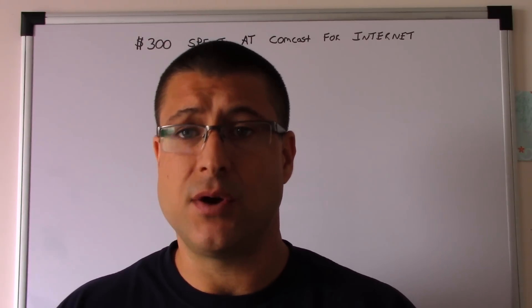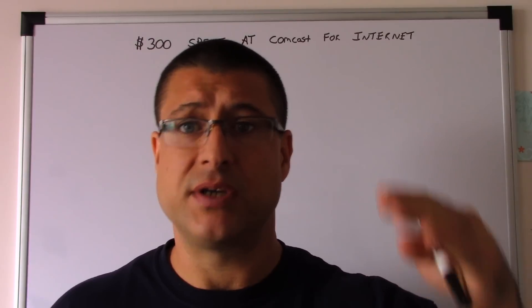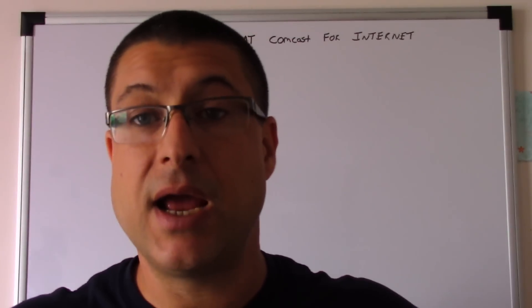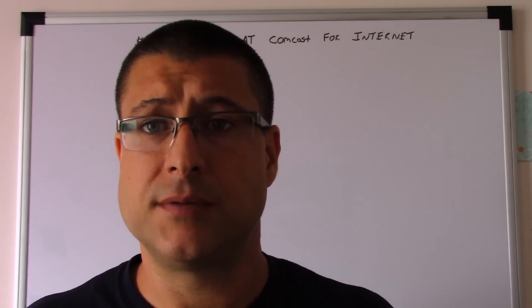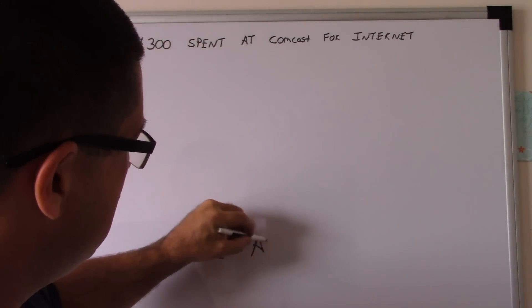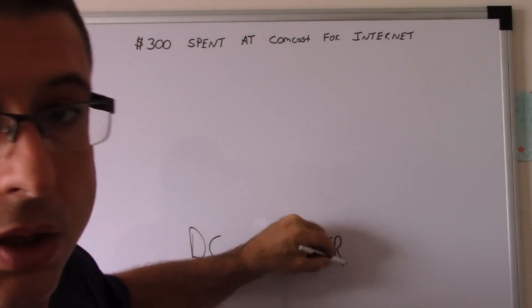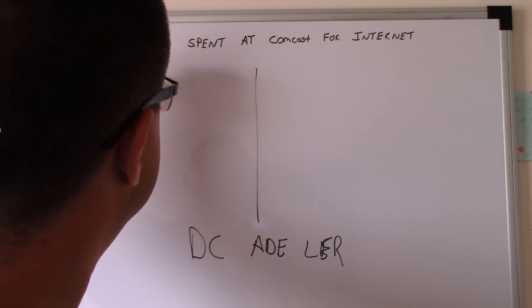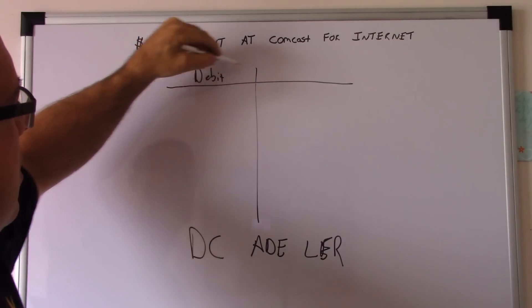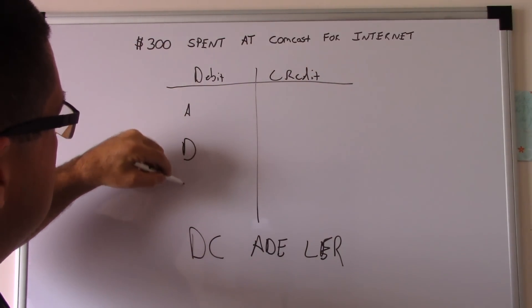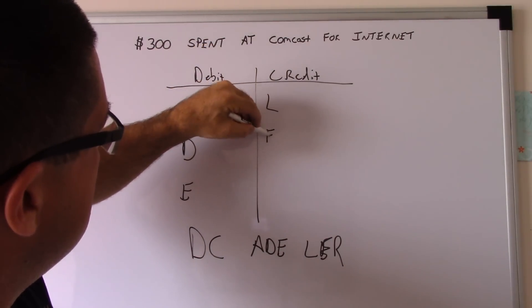In my opinion, if you know what happens with the cash of the business, whether it's a debit or a credit, you're going to have half of your journal entry done. We use DC ADE/LE. It means there's a debit and a credit — DC — and then ADE/LE: Asset, Draw, Expense, Liability, Equity, Revenue.